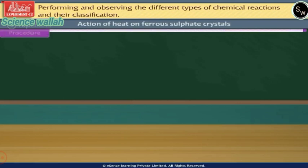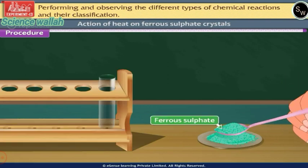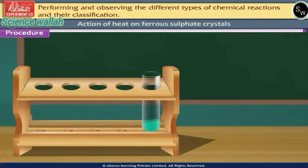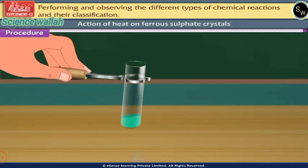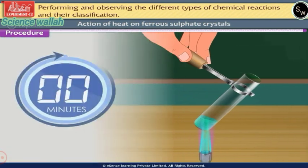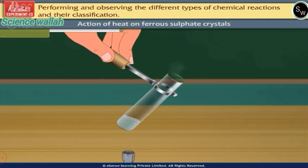The next reaction is the action of heat on ferrous sulphate crystals. Procedure: Take about 10g of ferrous sulphate crystals in a clean and dry hard glass test tube. Hold the test tube using a test tube holder and heat it gently over a burner for about 10 minutes.